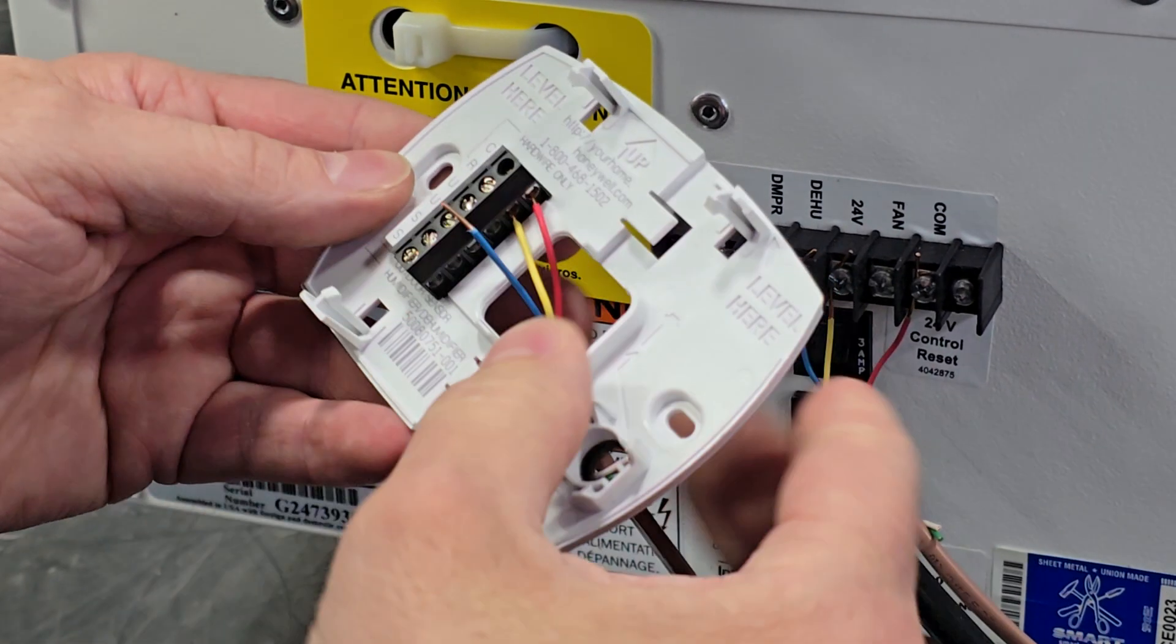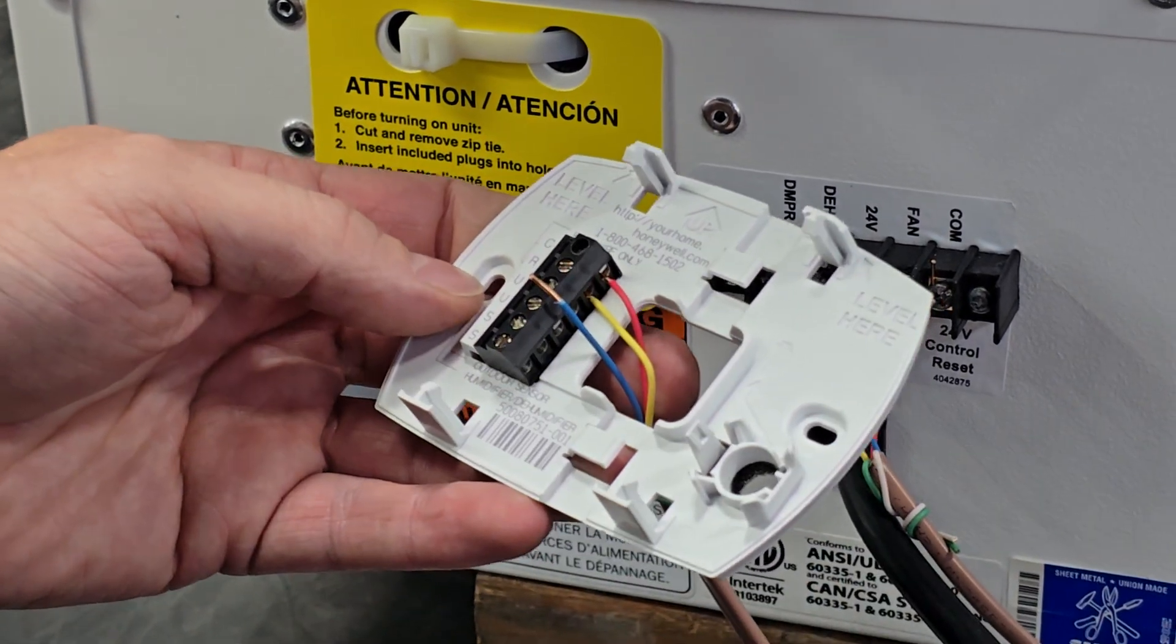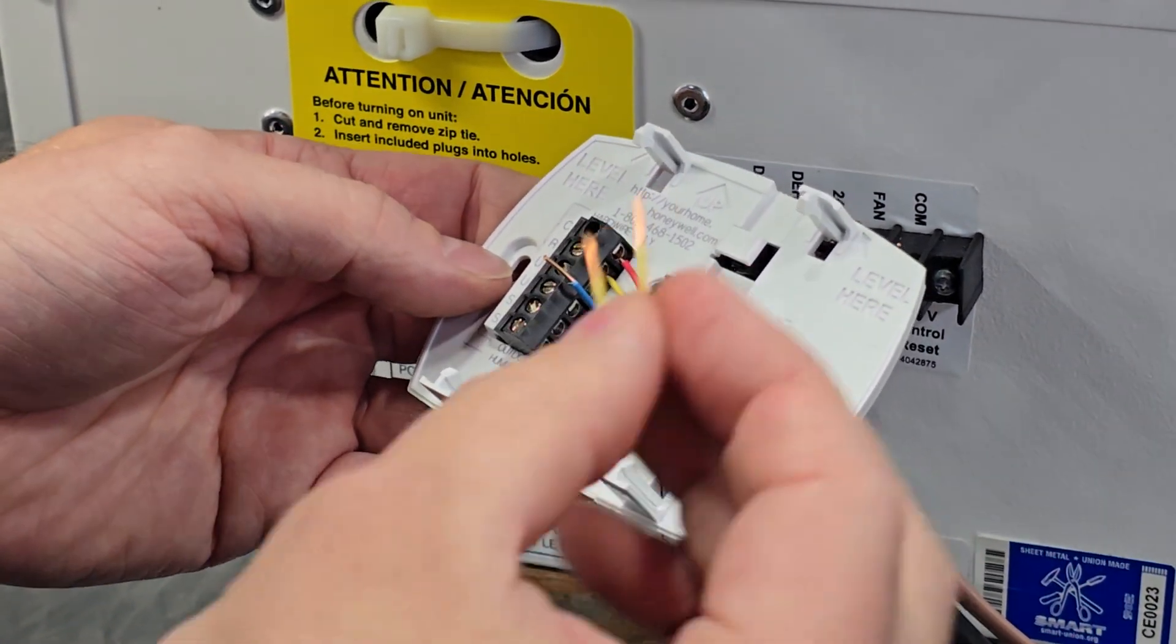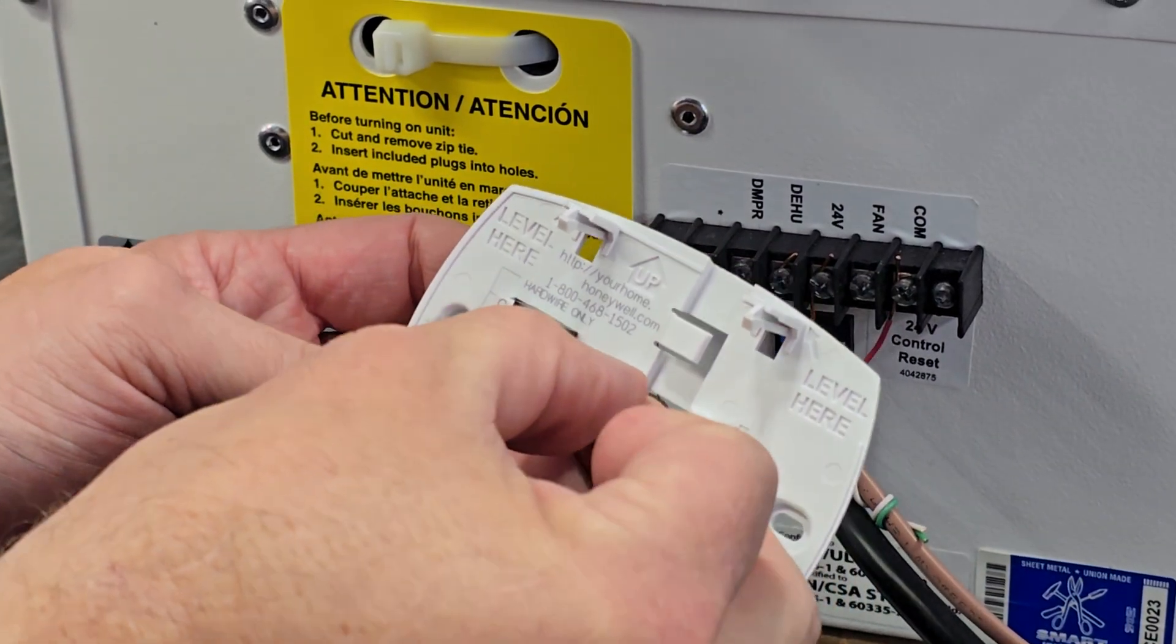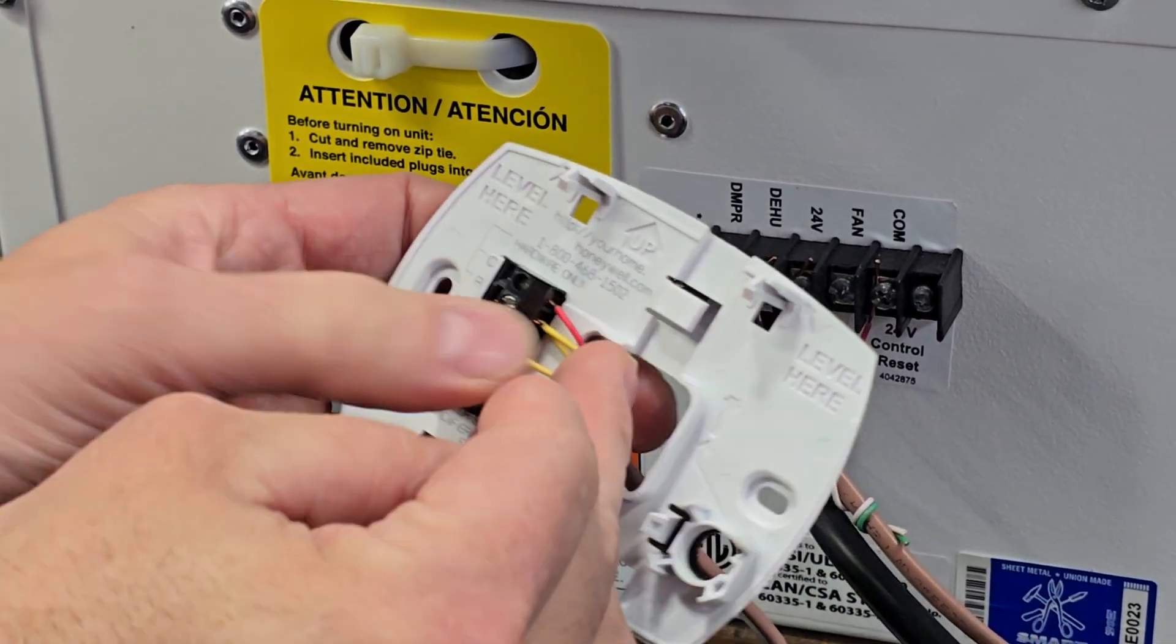The yellow will go to the R terminal along with one side of the jumper wire, so you'll have two wires in here.